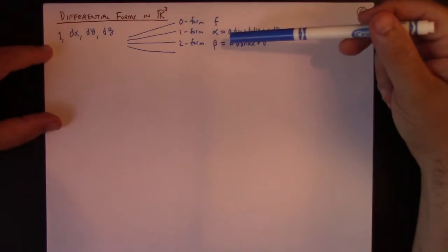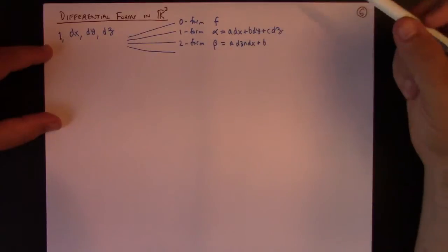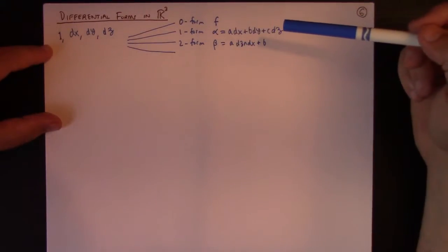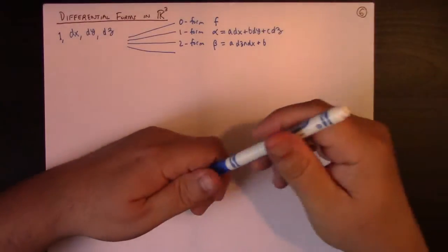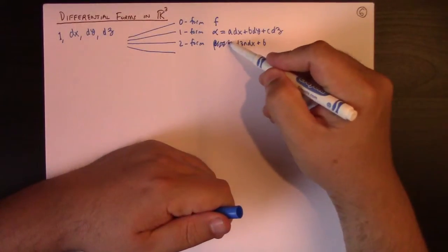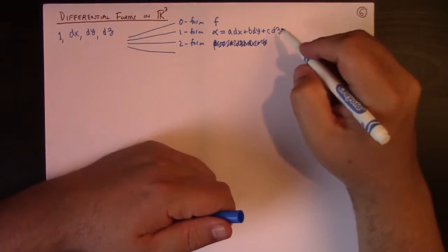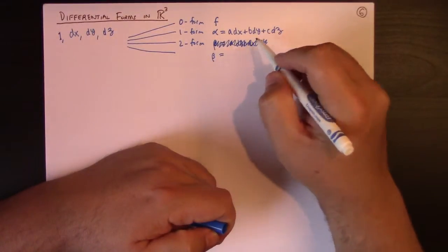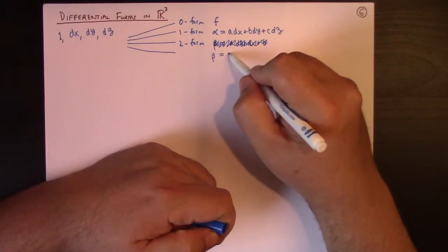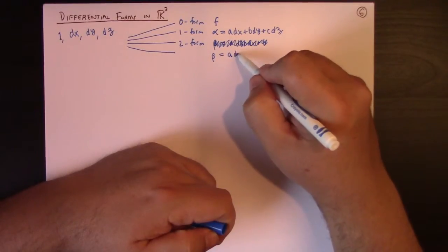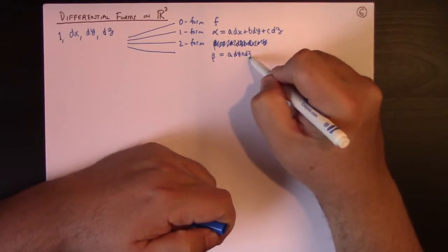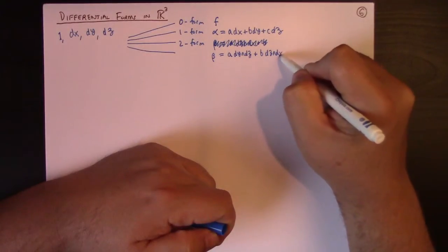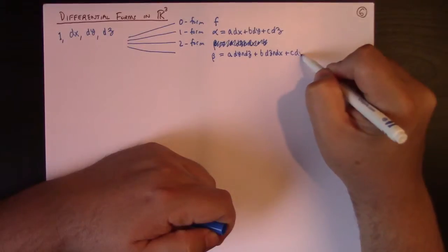You have a 2 form. Let me fix this. I wanted to write beta equals to something like A dy wedge dz plus B dz wedge dx plus C dx wedge dy.